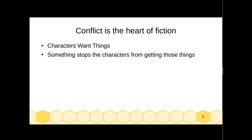Something is going to stop your characters from getting those things easily. So if a character wants a new car, maybe they don't have enough money, or maybe their spouse is telling them they can't spend money on a new car when they have a child on the way, or they should spend the money on something else. Or maybe they want romance, but the people they want romance from aren't interested in them or don't know them yet. Something is getting in the way, and that is where conflict arises.